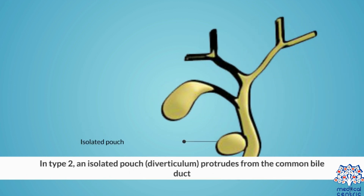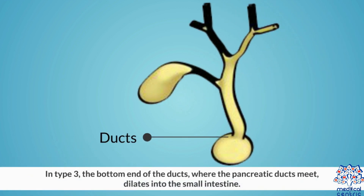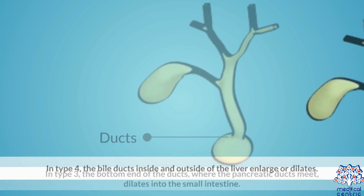In Type 2, an isolated pouch, or diverticulum, protrudes from the common bile duct. In Type 3, the bottom end of the ducts, where the pancreatic ducts meet, dilates into the small intestine.